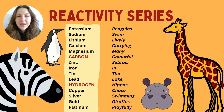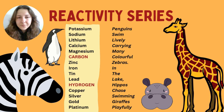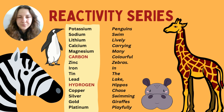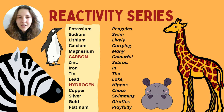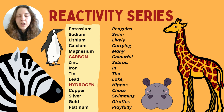The mnemonic maps to: potassium, sodium, lithium, calcium, magnesium — all at the top and very reactive. We then have carbon, which is a non-metal — more on that in a moment. Then zinc, iron, tin, and lead. We also have hydrogen, a gas but not a metal. Then copper, silver, gold, and platinum, which are more precious metals. Potassium is the most reactive at the top; gold is the least reactive at the bottom.